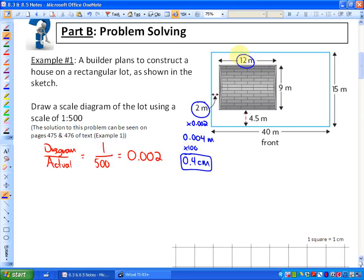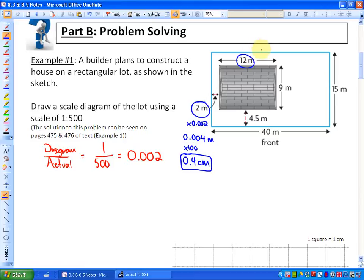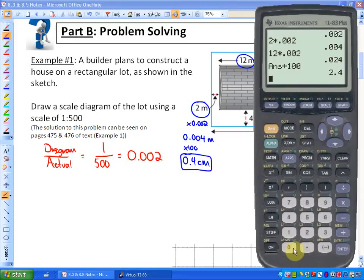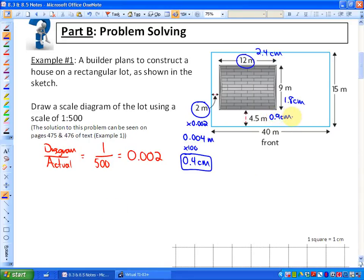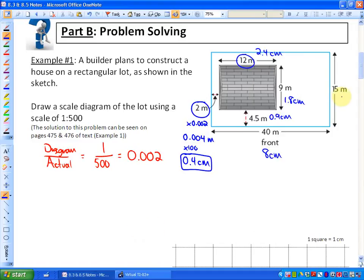So 12 times the scale factor, 0.002, and then if we times that by 100, it will make it into centimetres. So that would be 2.4 centimetres. This one you would have as 1.8 centimetres. 4.5 would be 0.9 centimetres. And 40 metres would become, I believe, 8 centimetres. And 15 metres would become 3 centimetres. So those are all the distances that we are going to draw in this particular diagram.